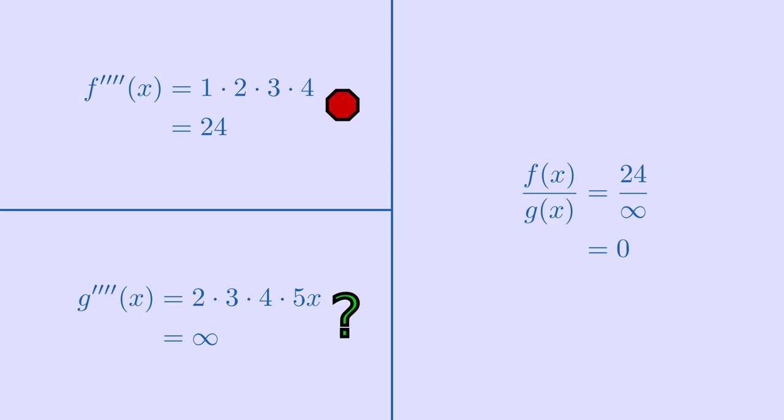Then, we have to stop, as we no longer have an indeterminate form. In this case, the numerator has been ground down to a constant while the denominator still has an x in it, and will therefore still go to infinity as x does. Our form is now a finite number divided by infinity, which is always zero. This means that it's also the ratio of the original form.